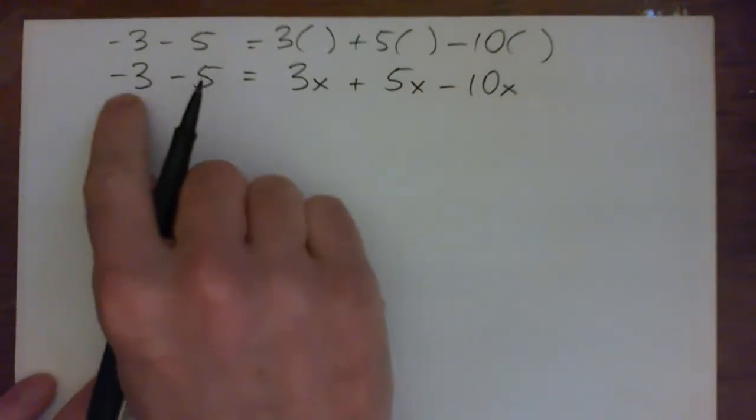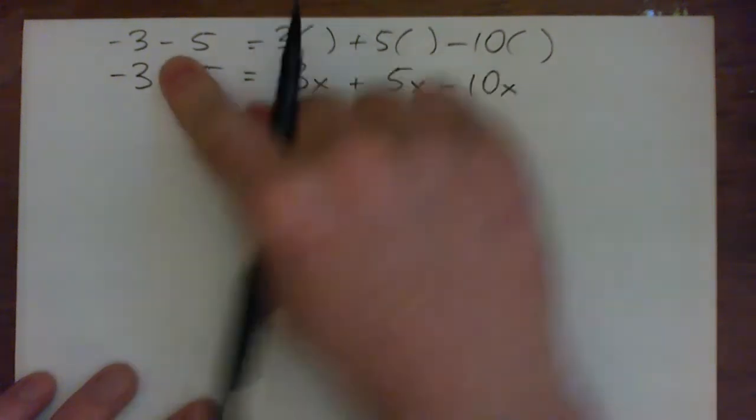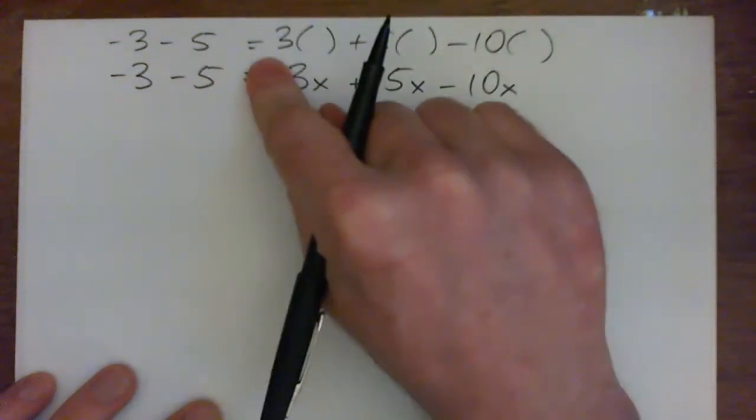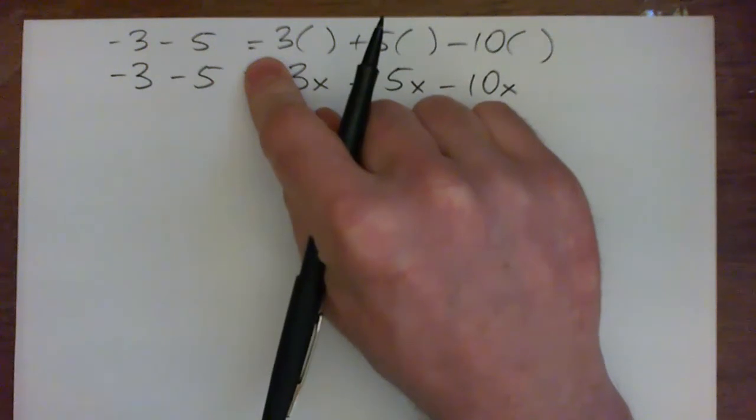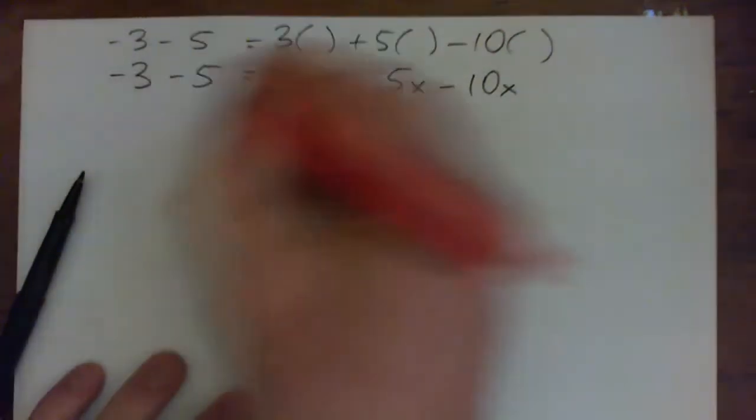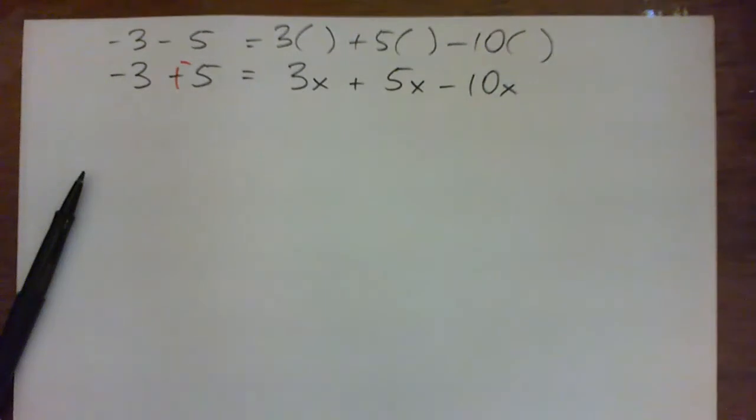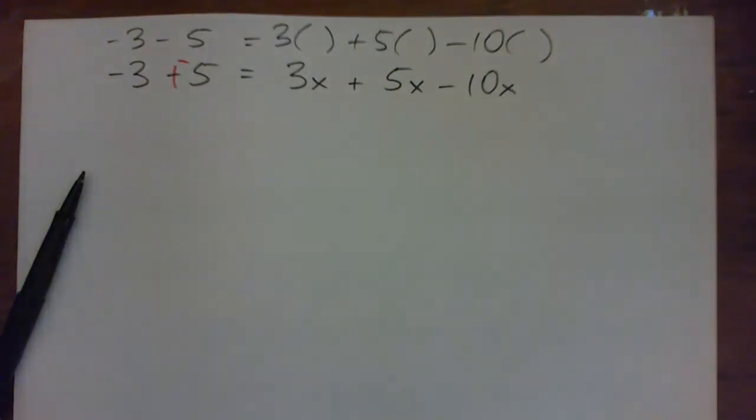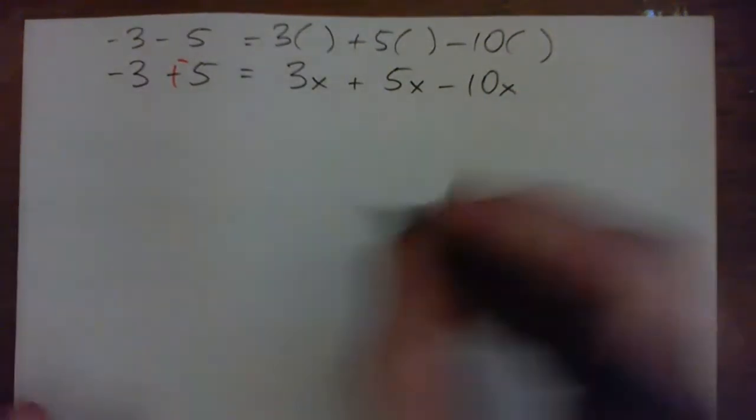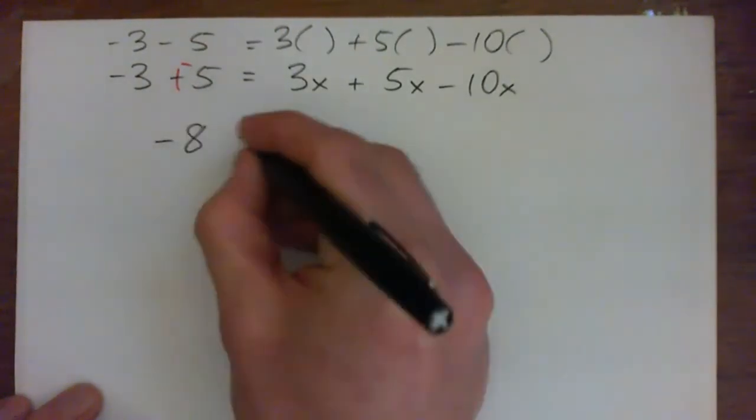So on the left you've got negative 3 minus 5, that's kind of like if you're in debt by $3 and you subtract 5 or you spend $5, you're now in debt by 8. Or you can use your blam blam trick and go change that subtract to a plus negative, so blam blam. It says negative 3 plus negative 5. Three bad guys plus five bad guys is eight bad guys. So either way, that's negative 8.